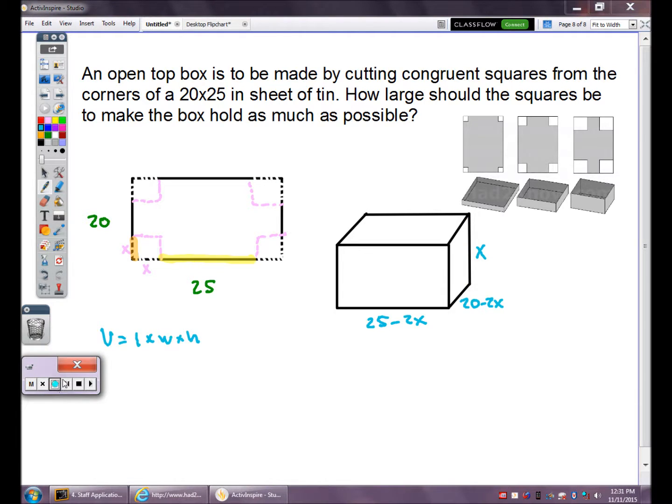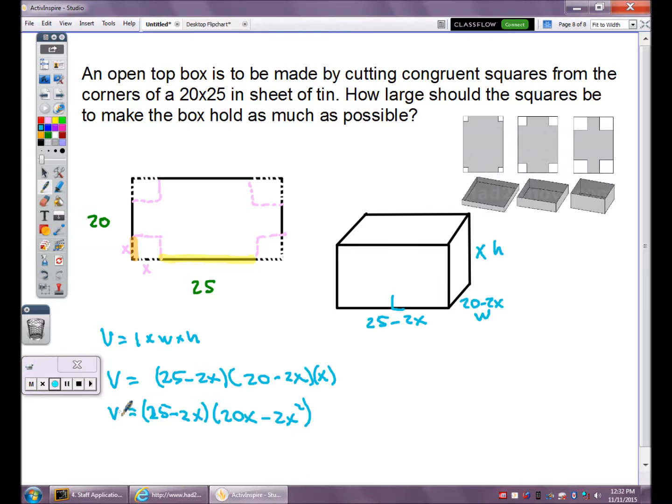The volume of my box is length times width times height. I'm just going to plug in the three dimensions: length, width, and height. So now I have a new setup for volume. Instead of L, W, and H, I have all X's. I'm going to multiply all this together. I'm going to multiply the X to the 20 and the 2X, then we're going to FOIL the two binomials. Distributing the X gives me 20X minus 2X squared. Then FOIL. FOIL everything out, collect like terms, simplify, put it in order. Now you've got a formula for volume.